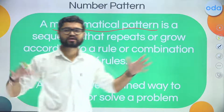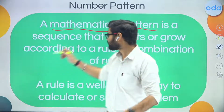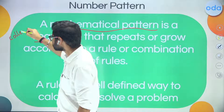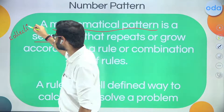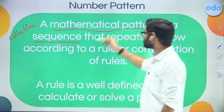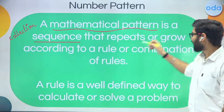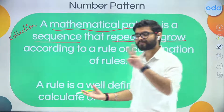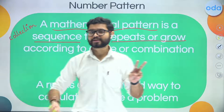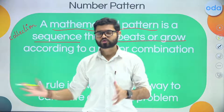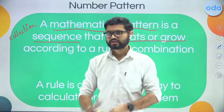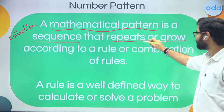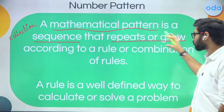Sequence just means a collection — as of now you can understand sequence means collection. A number pattern is a collection of numbers that repeats or grows. Two things are there because we have two kinds of patterns: either they repeat or they grow. Mathematical patterns are nothing but a sequence of numbers that either repeat or grow according to a rule or combination of rules.